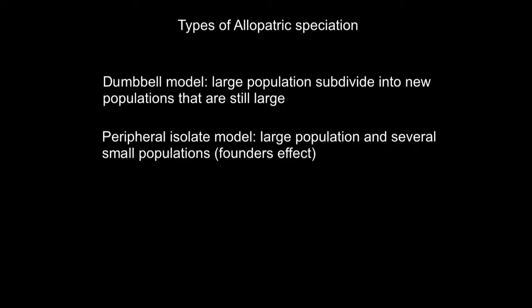The dumbbell model is when a large population is subdivided into new populations that are themselves relatively large, while the peripheral isolate populations that are in allopatric differ in size, with one large population and several small populations, similar to the founder effect discussed in chapter 8.